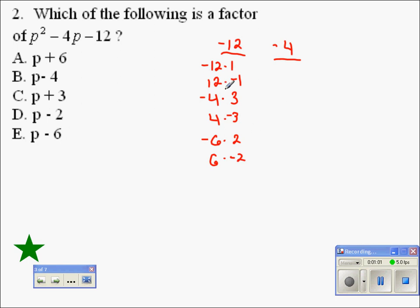And again, we're looking for which of these pairs multiplies to negative 12. They all do that. And which pair also adds to negative 4. If we take a look down through these solutions, we see that negative 6 plus 2 also adds to negative 4.